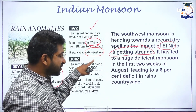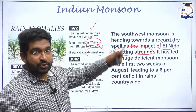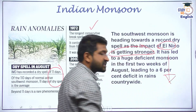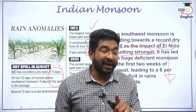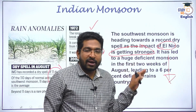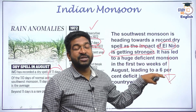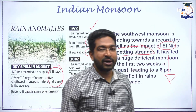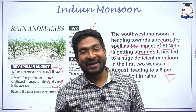In August we have seen deficient rainfall — the first two weeks, August 1st to 14th, showed a 6% water deficit year on year. To make up for this, we saw a huge amount of rainfall in July — in fact, during July there was almost 6% more rainfall than average. But in August we have seen a longer monsoon break, and we are all awaiting when this break will end.